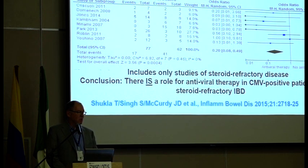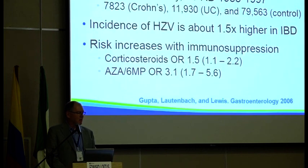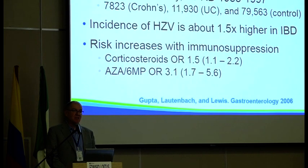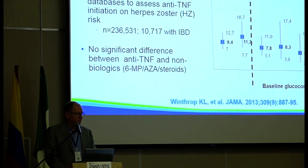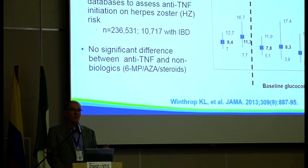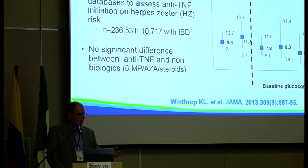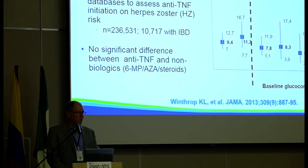Zoster is increased in IBD patients — this has been shown in multiple studies, including a large study by Jim Lewis. The risk goes up the more immunosuppressed you are. Looking at another study from a different database, different medications increase the risk. For corticosteroids, higher doses — I think the cutoff was about 20 milligrams or higher — the risk went up quite a bit.